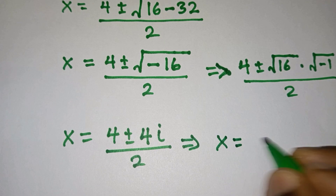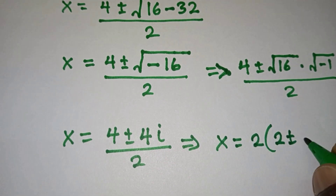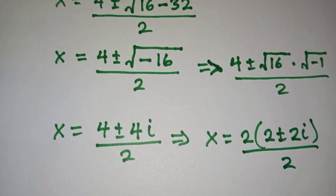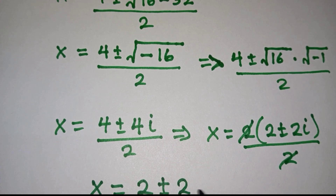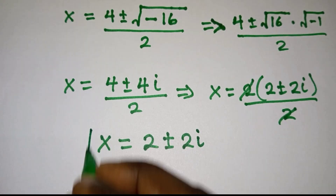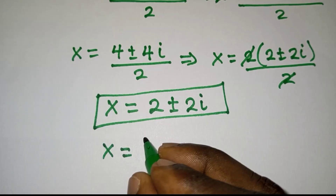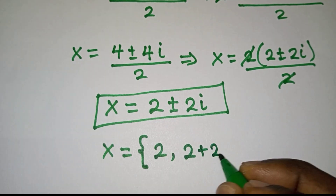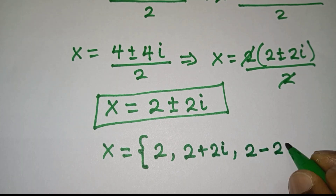So we have x equals 4 plus or minus square root of 16 — which is 4 — times square root of negative 1, which is i, divided by 2. Factoring out 2, we get x equals 2 times (2 plus or minus 2i), divided by 2, and the 2s cancel, giving x equals 2 plus or minus 2i as the other solutions. In all, we have x equals 2, x equals 2 plus 2i, and x equals 2 minus 2i.